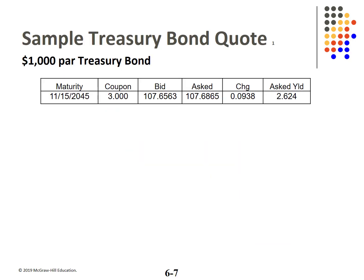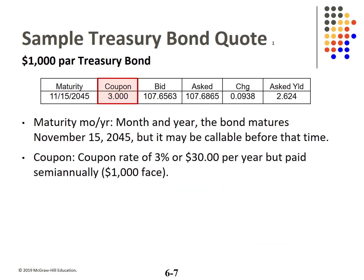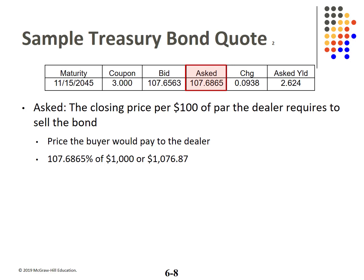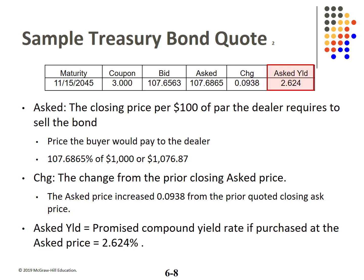Let's look at a sample Treasury quote. This bond matures on November 15, 2045. The coupon rate is 3% of face value, or $30 per year, but it's paid semi-annually. The bid price, per $100, is the price the dealer will buy the bond from you — in this case 107.6563, which is $1,076.56. The asked price is the price the dealer will sell to you, also quoted as a percent of par. The change is from the closing ask price yesterday, and the asked yield is the yield if purchased at the ask price.